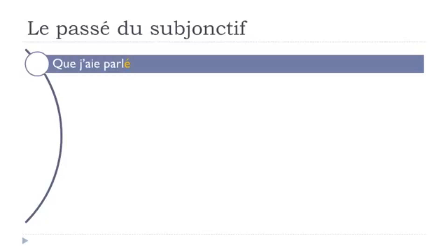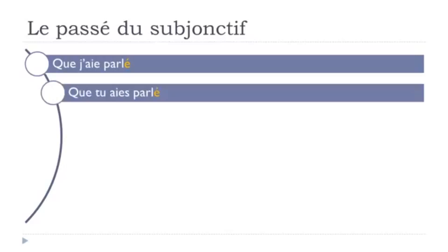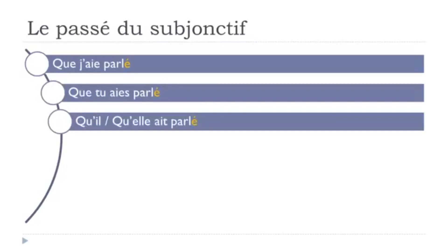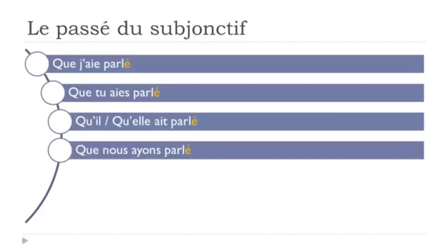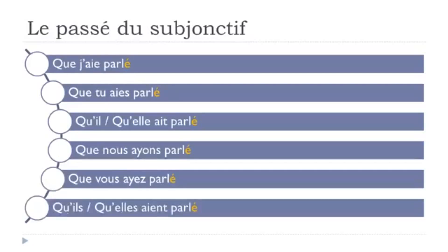Here is the full conjugation of the passé du subjonctif for the verb parler: que j'aie parlé, que tu aies parlé, qu'il ait parlé, qu'elle ait parlé, que nous ayons parlé, que vous ayez parlé, qu'ils aient parlé, qu'elles aient parlé. First you put avoir at the subjonctif présent form, then your participe passé, and you get a beautiful passé du subjonctif.